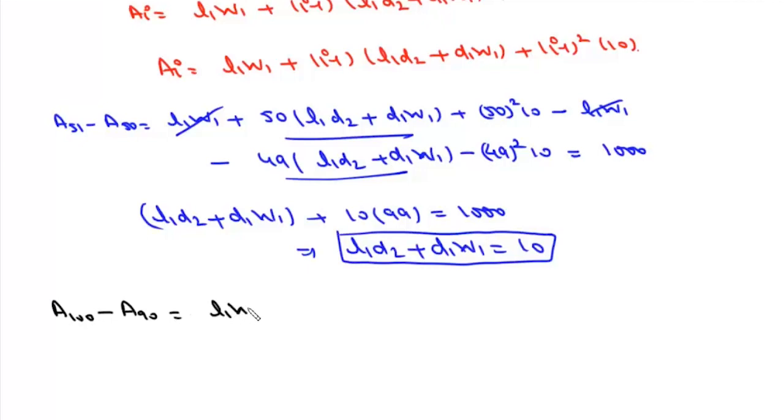Now we need to find the value of A100 minus A90. A100 is L1W1 plus 99 times L1D2 plus D1W1 plus 99 square into 10, and then minus L1W1, now here it is minus, i minus 1 is 89, so 89 times L1D2 plus D1W1 minus 89 square into 10.